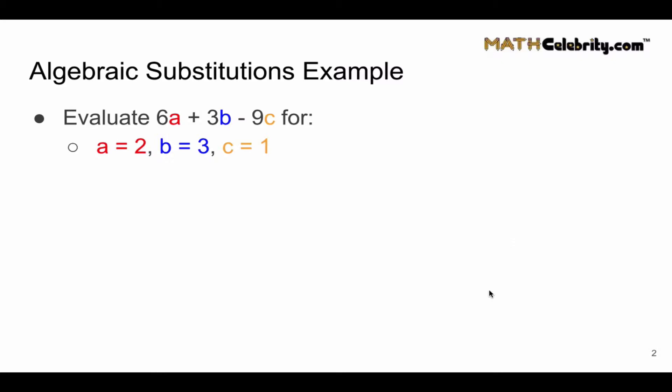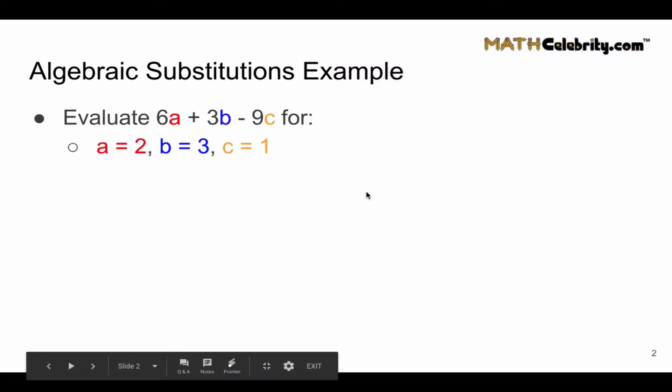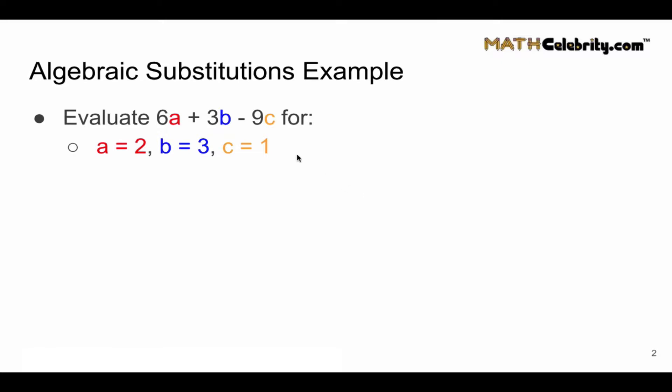Now let's walk through our three-step tip-off to why this is an algebraic substitutions problem. First, we've got 6a plus 3b minus 9c. This is a standard algebraic expression. Second, we're given variable values for all three variables a, b, and c. And finally, we're asked to evaluate that expression.